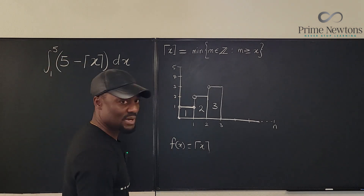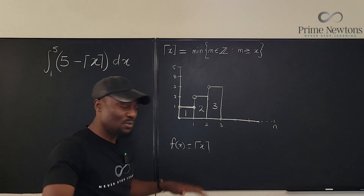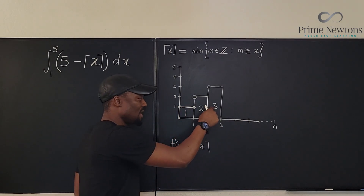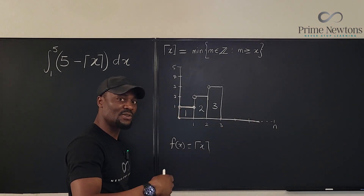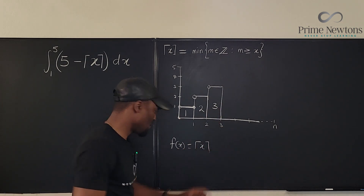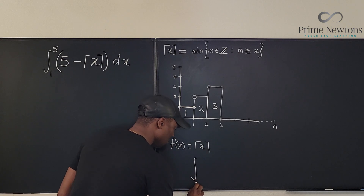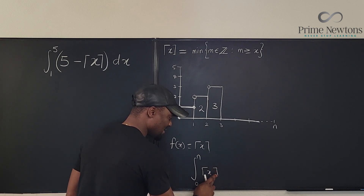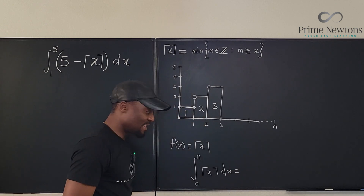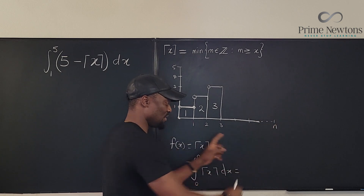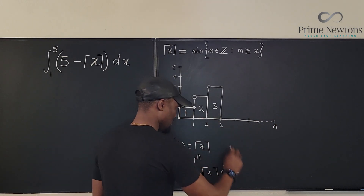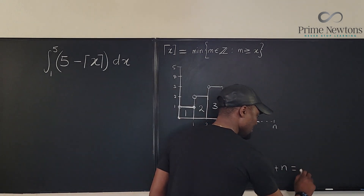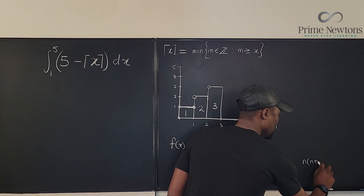The number of rectangles is determined by whatever the upper limit is. For the general case from 0 to N: going to 1 gives one rectangle, going to 2 gives two rectangles, and going to N gives N rectangles. The areas are just the values of the numbers. So the integral from 0 to N of the ceiling of x dx equals the sum 1 + 2 + 3 + ... + N, which equals N times (N + 1) over 2.